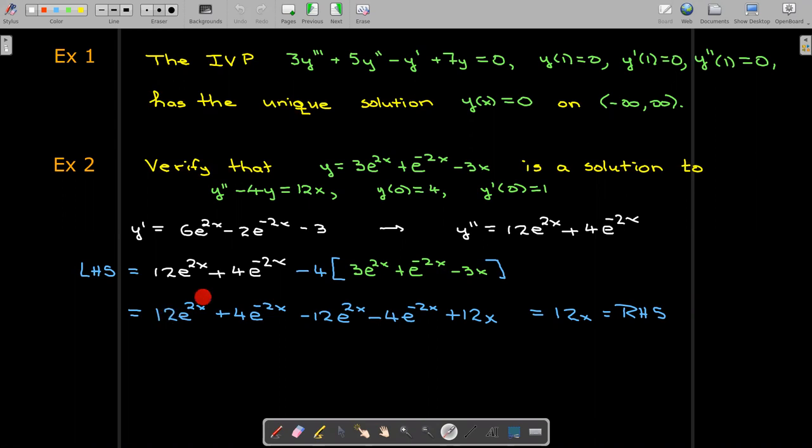So I see that I have 12e^(2x) minus 12e^(2x) and then 4e^(-2x) minus 4e^(-2x). So the only term that's left over is the 12x which is what our right hand side is in the given equation.